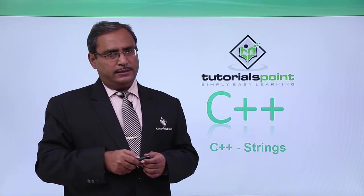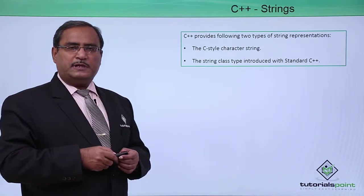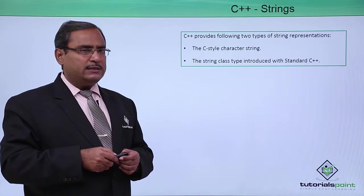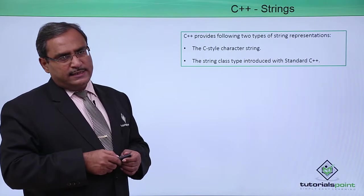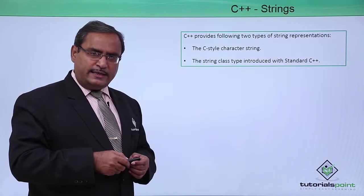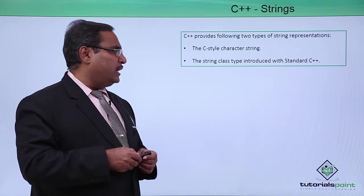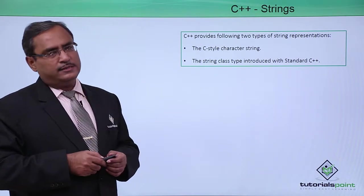C++ strings. In case of C++ programming, we can define one string in two different types. First one is the C-style character string and the second one is the string class type introduced with standard C++.